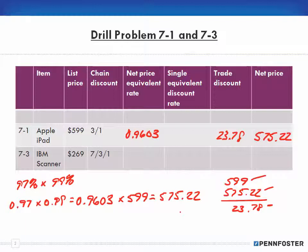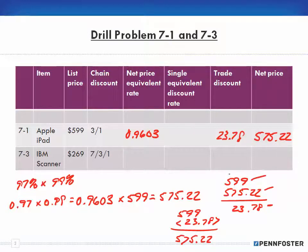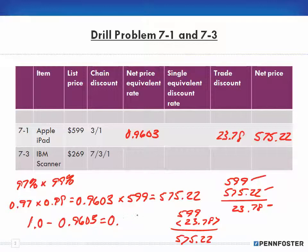I take 599 and subtract 575.22, which gives me $23.78 — that's my trade discount amount. So list price minus net price gives the discount amount, or conversely, 599 minus 23.78 equals 575.22, the net price. For the single equivalent discount rate, that's the complement of my net price equivalent rate: 1.0 minus 0.9603 equals 0.0397 — that's my single equivalent discount rate.